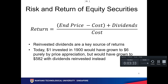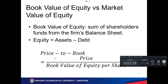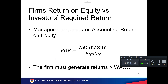Book value of equity versus market value of equity: book value is what's on the accounting books — assets minus liabilities. Market value depends on what is traded in the market today. This is more relevant for publicly listed companies.